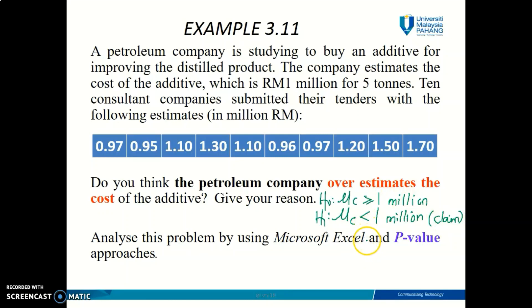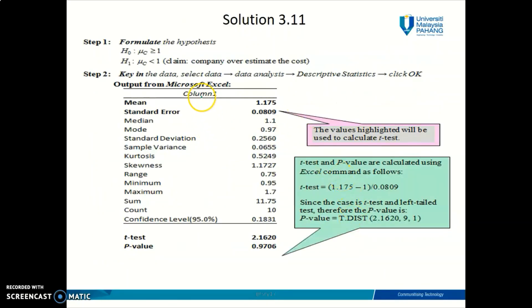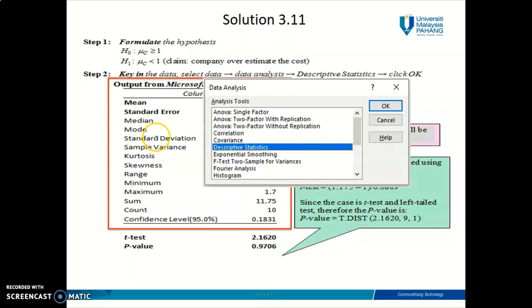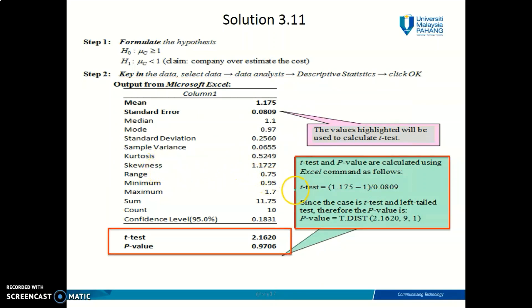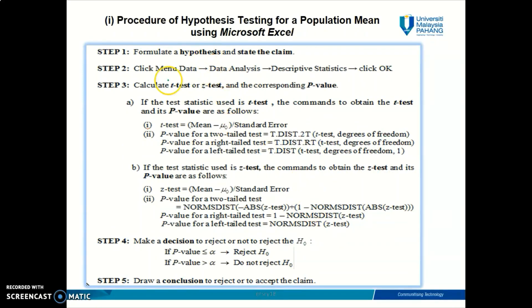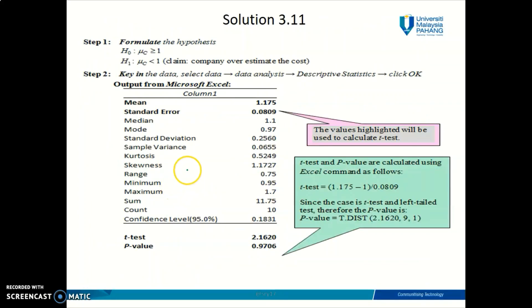Next, we need to find the p-value using Microsoft Excel. The output will have two parts: the first part comes from using the descriptive statistics in Microsoft Excel, and the second part uses a formula you need to type in on your own. This formula depends on your case — if it involves a t-test, you use the formula in option A; if it is a z-test, you use the formula in option B. Once you get the p-value, here 0.9706, then we need to make our decision.